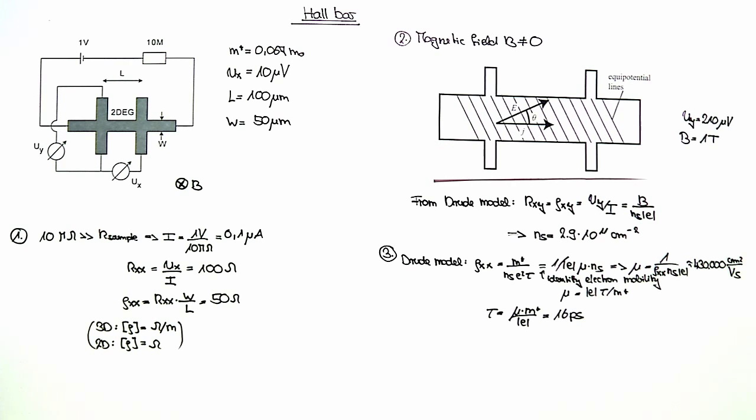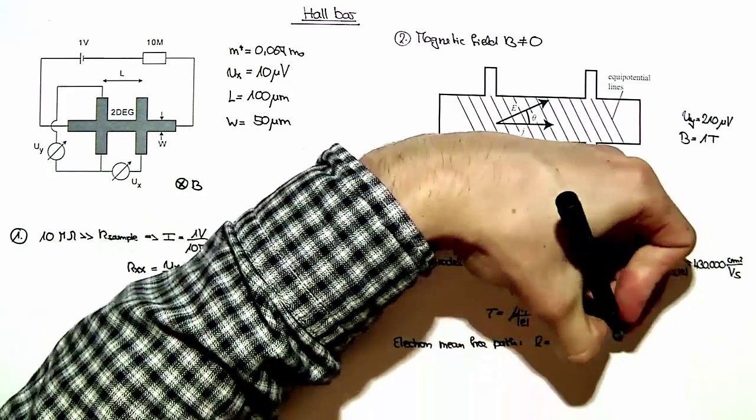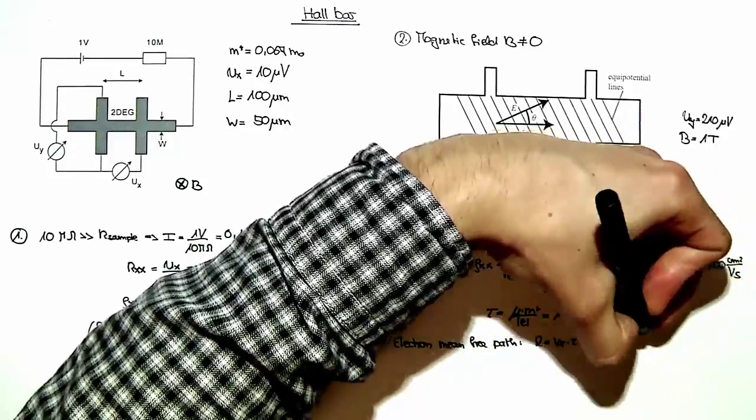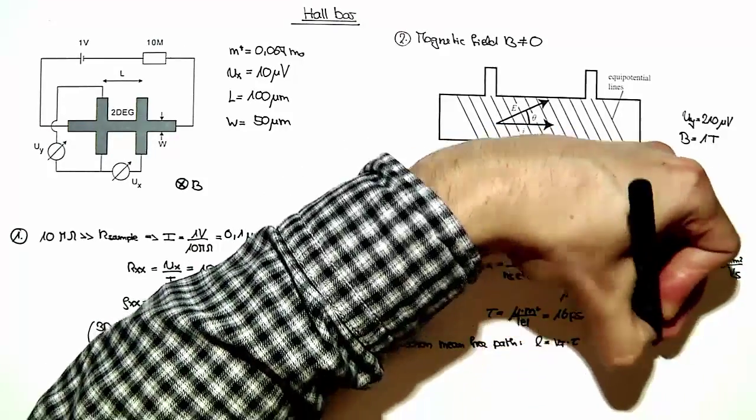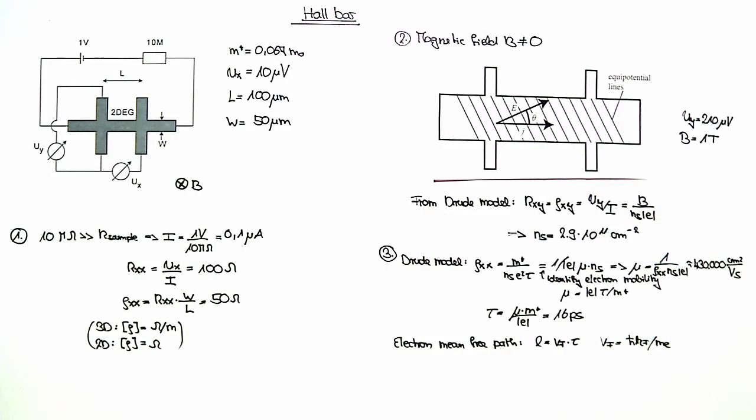Now, as the last question, we are asked to calculate the mean free path of electrons at the Fermi energy. We can write that first of all in the following general form. This is basically a classical equation where the electron mean free path L is just given as a product of the Fermi velocity times the scattering time. We can now express the Fermi velocity as h bar kf over the electron mass and plug this in to this equation here.